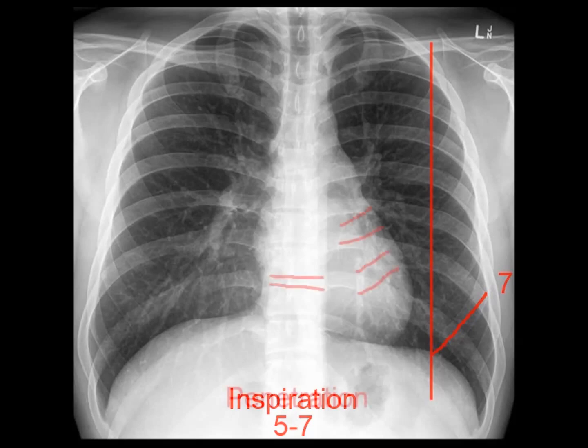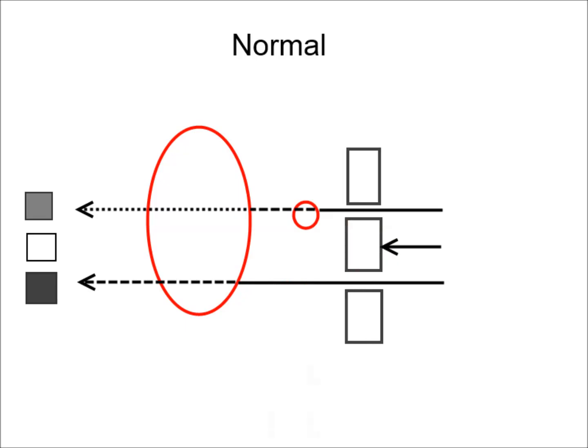Finally, check the penetration of the rays. Simply put, an overpenetrated film is too dark, an underpenetrated one is too white. A trick to judge penetration is to look in the region of the heart. If you can see the spaces between the vertebrae and pulmonary vessels through the heart, penetration is adequate.